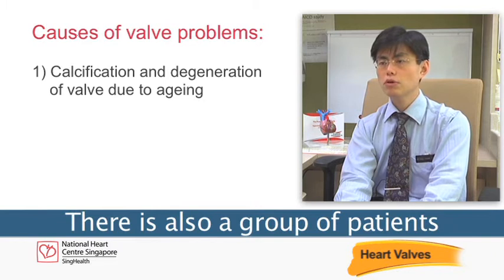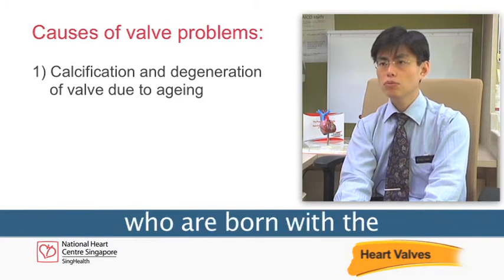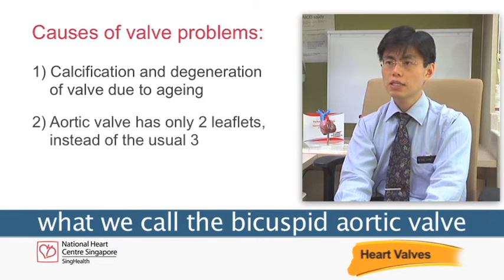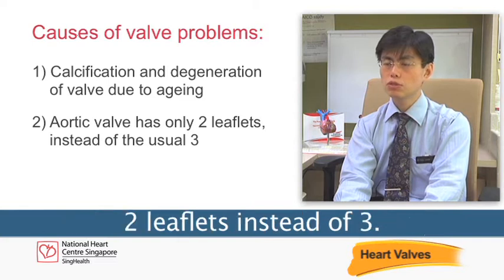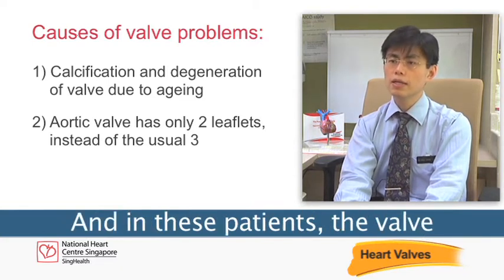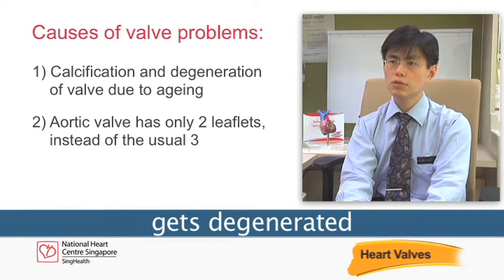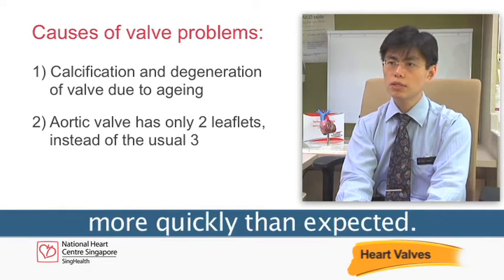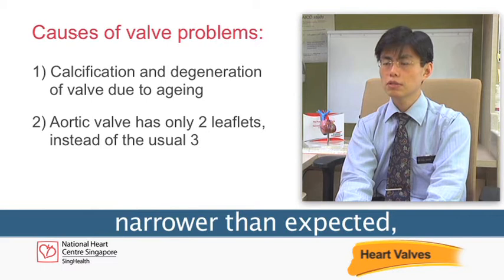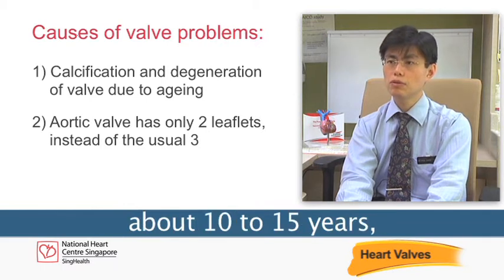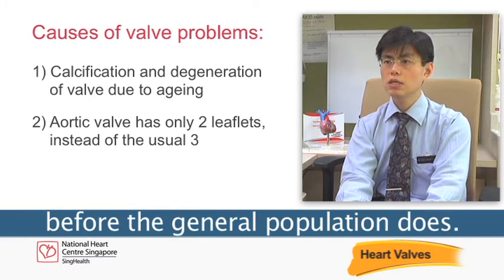There is also a group of patients who are born with what we call a bicuspid aortic valve, which means the valve has only two leaflets instead of three. In these patients, the valve degenerates more quickly than expected, and their valve becomes narrower about 10 to 15 years before the general population does.